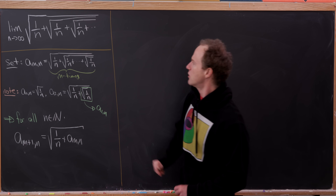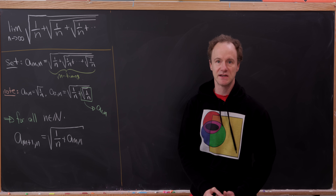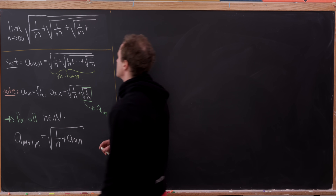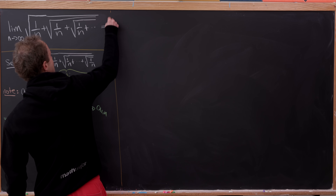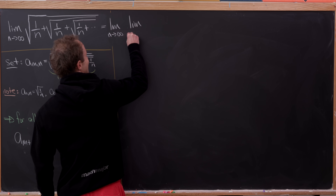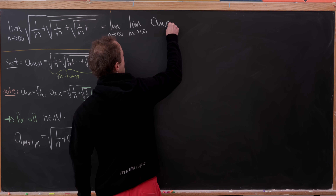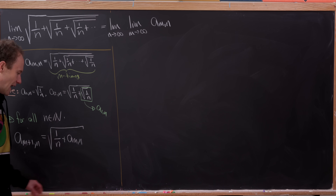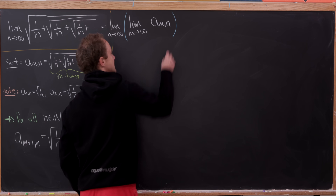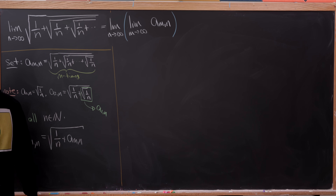Under this setup, the argument of the original limit is really the limit as m goes to infinity of this sequence. So we can rewrite it as the limit as n goes to infinity of the limit as m goes to infinity of a_{m,n}, with the m-limit on the inside, nested within the n-limit.